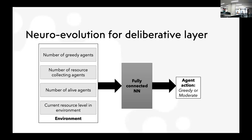Now let me explain how deliberation works. Previously it was deterministic; now with simple learning via neuro-evolution, agents take as parameters the number of greedy agents present, the number of resource-collecting agents (where a moderate agent below its threshold counts as collecting), the number of allied agents, and the current resource level in the environment. The agent action can either be greedy or not.